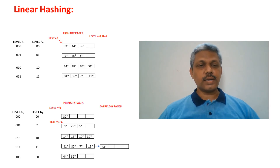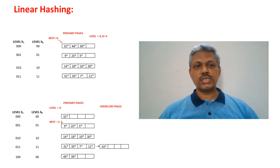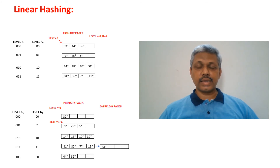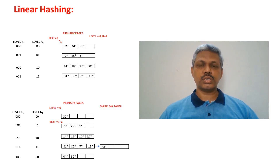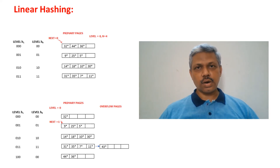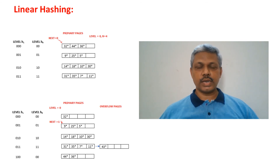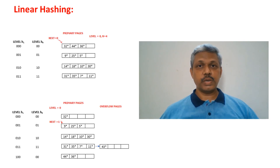This is how the split mechanism starts. If you keep on adding entries, you may come to a stage where next will reach the last value. Even after splitting the last page, next has to revert back to zero and the level which was existing at zero now becomes level one. The hash functions we consider will become h1 and h2 instead of h0 and h1, because h0 is no longer useful — we have already crossed that stage. Once all pages are split, four pages become eight, and h1 and h2 are useful now. At any point of time, two hash functions will be used.